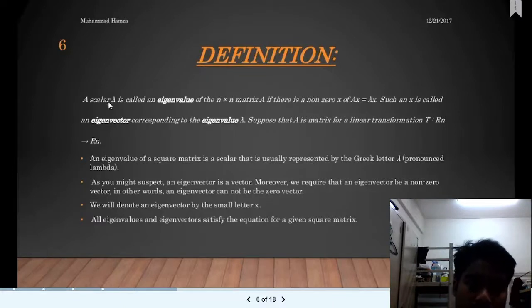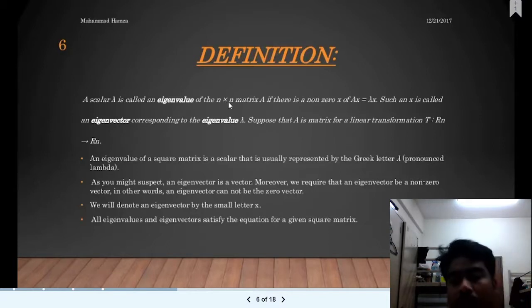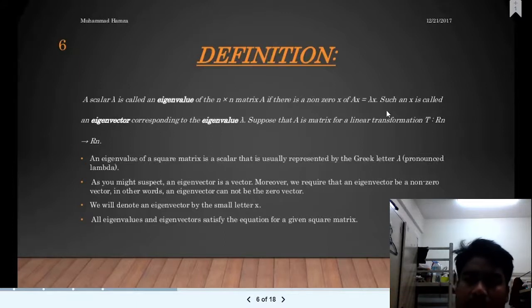A scalar lambda is called an eigenvalue of the n by n matrix A if there is a non-zero vector X where AX equals lambda X. So X is called an eigenvector corresponding to the eigenvalue lambda. Suppose that A is a matrix for a linear transformation. An eigenvalue of a square matrix is a scalar that is usually represented by the Greek letter lambda.